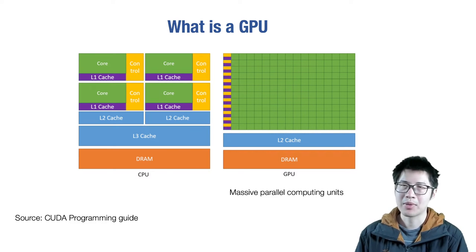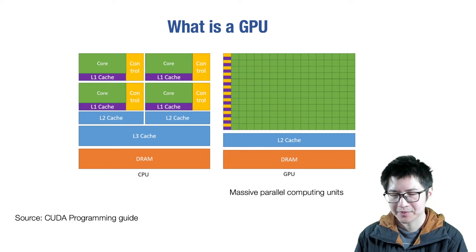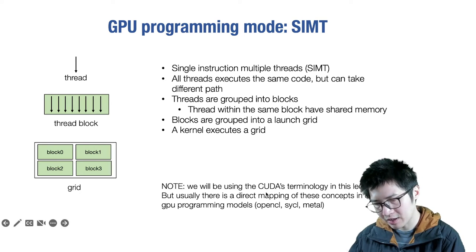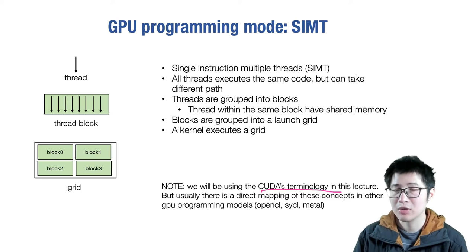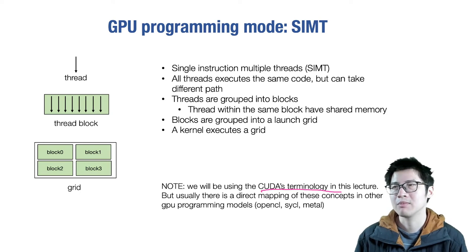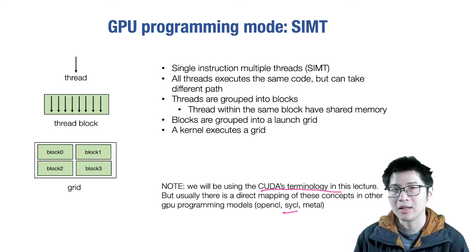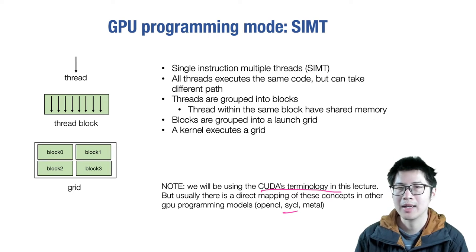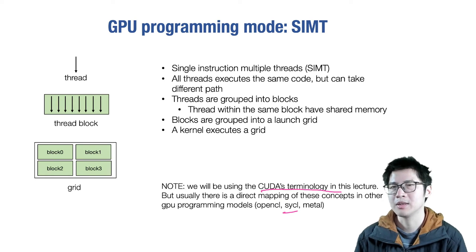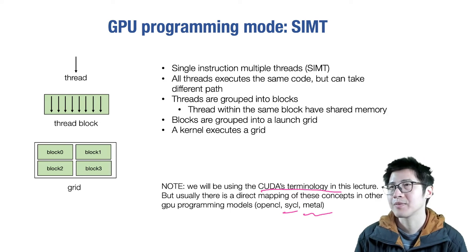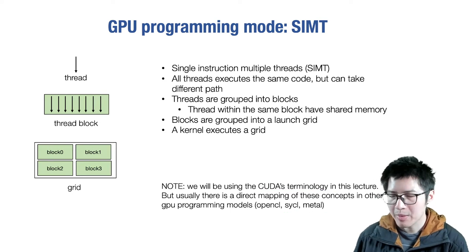So that's why GPU gives you massive parallelism. The question is how we program those massively parallel units — that comes back to the GPU programming model. We're going to use CUDA terminology, but usually there's a direct mapping between concepts in other GPU programming models. For example, CUDA maps to OpenCL, which is used by some ARM and mobile GPUs. SYCL is another one pushed by the Khronos open community standards, and Apple has a standard called Metal working on similar things.